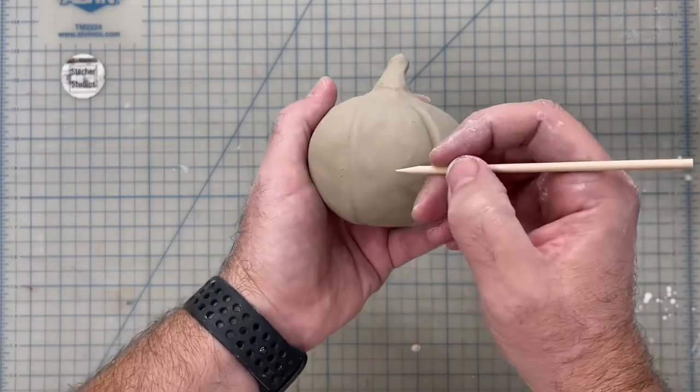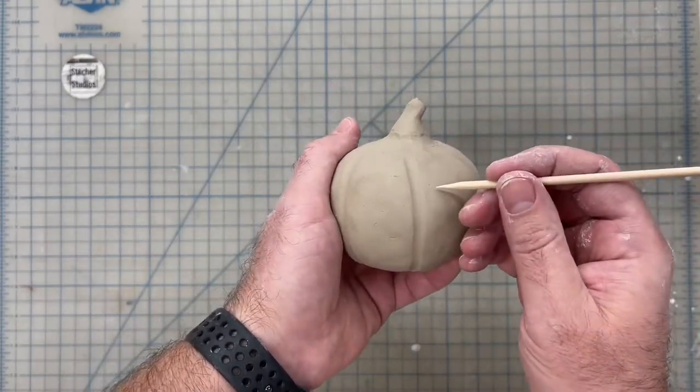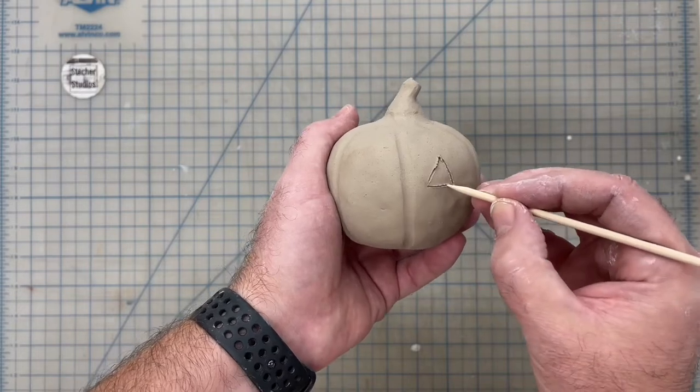Here's our pinch pot pumpkin from last session. We've allowed it to dry the leather hard and now it's time to draw the face on our jack-o'-lantern.